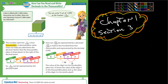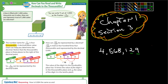We are starting 1-3, and we're talking about place value. If I wrote the number 4,568,129 — most of you know what place the 9 is: it's the 1's. The 2 is the 10's. This 1 right here is the 100's. What place is the 8? 8,000 — so the value of that 8 is actually 8,000.